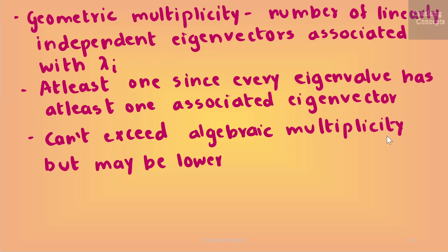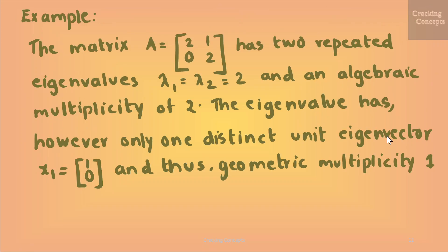The geometric multiplicity of λ_i is the number of linearly independent eigenvectors associated with λ_i. In other words, it is the dimensionality of the eigenspace spanned by the eigenvectors associated with λ_i. A specific eigenvalue's geometric multiplicity must be at least one. An eigenvalue's geometric multiplicity cannot exceed its algebraic multiplicity. For example, a matrix A with two repeated eigenvalues λ1 = λ2 = 2 has algebraic multiplicity 2, but only one distinct eigenvector x1 = [1, 0], so its geometric multiplicity is 1.